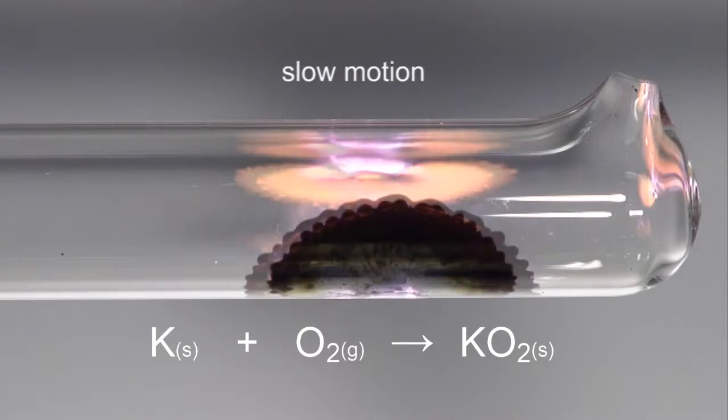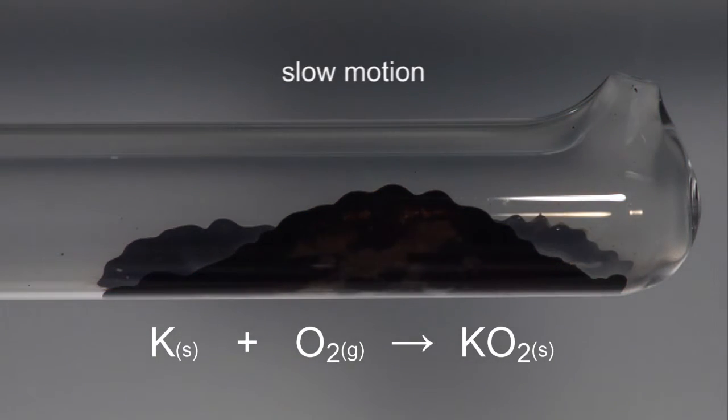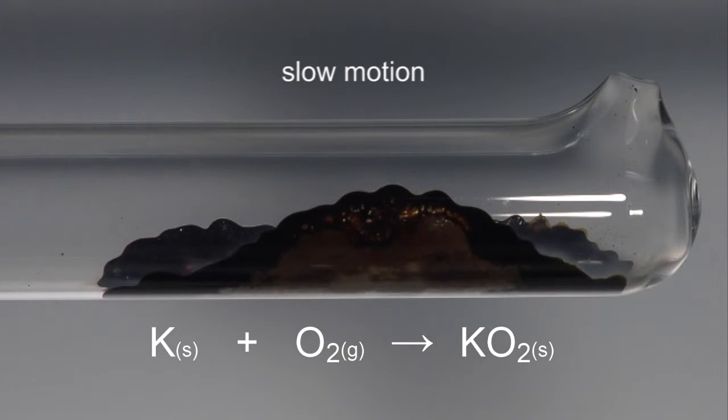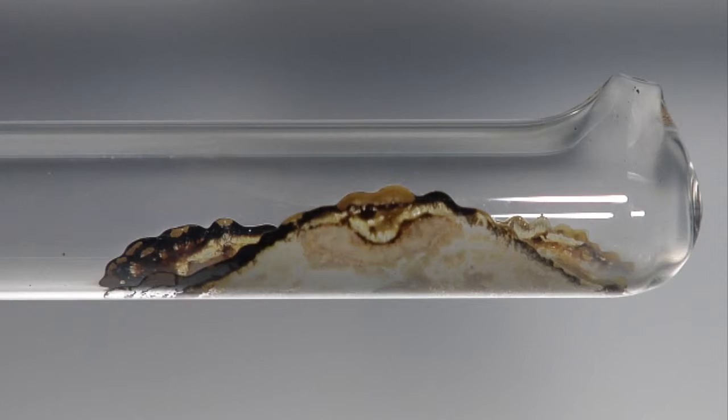A characteristic lilac color is seen in the flame, although this is eventually masked by a sodium color from the glass. The product oxides coat the glass.